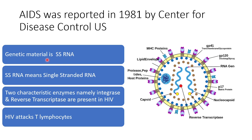The genetic material is SSRNA, which means single-stranded RNA. Here you can find this SSRNA. Two characteristic enzymes, namely integrase and reverse transcriptase, are present in HIV virus. This virus attacks T-lymphocytes.